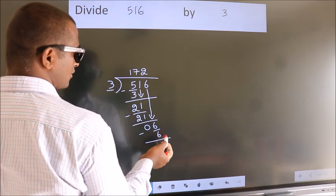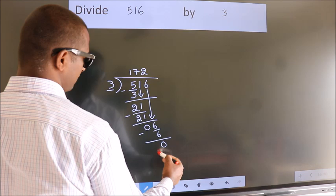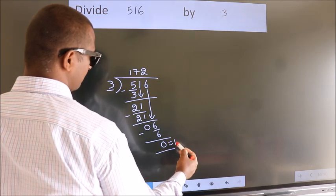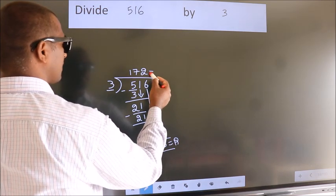No more numbers to bring down. So we stop here. This is our remainder. This is our quotient.